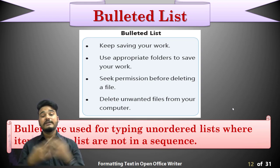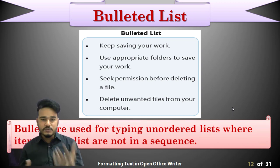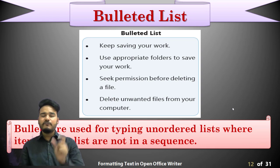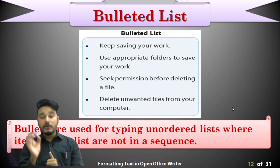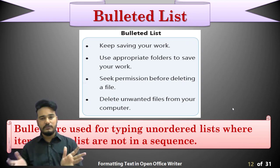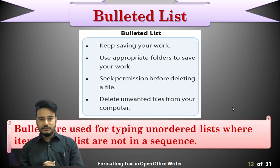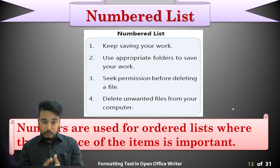In the bulleted list example shown, items include: keep saving your work, use appropriate folders to save your work, seek permission before deleting a file, delete unwanted files from your computer. Before each line, one dot is given — that dot is the bullet. Bullets are used for unordered lists where items are not in sequence and order does not matter. Numbered lists are used where items should be in a proper sequence and order.